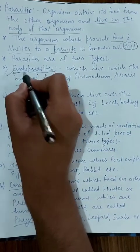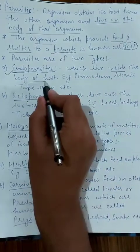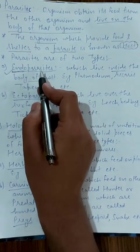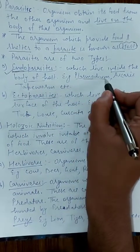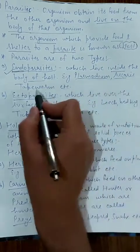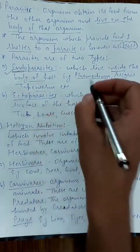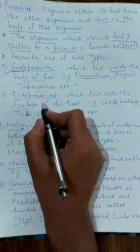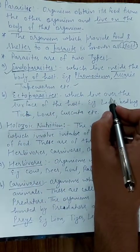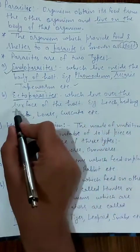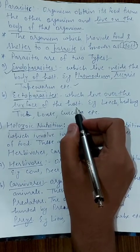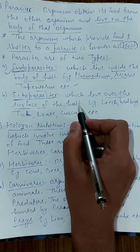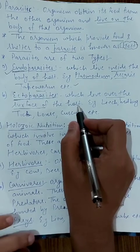Endoparasites live inside the body of the host. Examples of endoparasites are malarial parasite, Ascaris, and tapeworm — these live inside the human or host organism's body and derive their food from there. The second type of parasites are ectoparasites; 'ecto' means outside — they live on the outer surface of the host's body and derive their food from there.